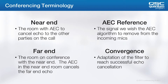We'll discuss best practice for this later in the training module. The process of convergence is what the adaptive filter is doing to achieve the best echo cancellation possible given the circumstances. When the far end is hearing no echo, we say the AEC algorithm is converged.